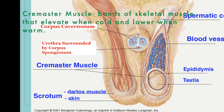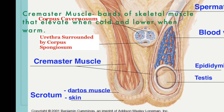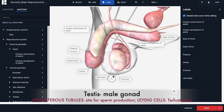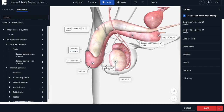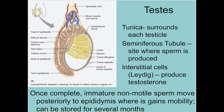The cremaster muscle consists of long fibrous skeletal muscle that will elevate the testes to bring them closer to the body to keep them warm when it is too cold, and will relax to allow the testes to lower and move the sperm away from the warm body temperature when it's too warm. The testes are the male gonads. Within the testes are seminiferous tubules, which are the site of sperm production, as well as Leydig cells or interstitial cells that are responsible for producing the male steroid hormone testosterone, responsible for male characteristics.